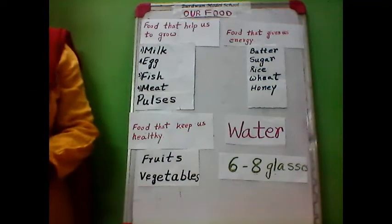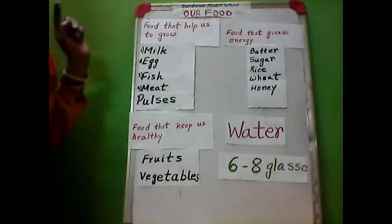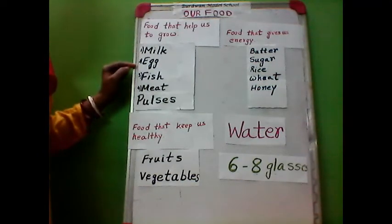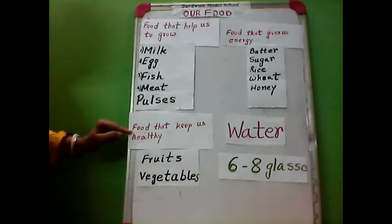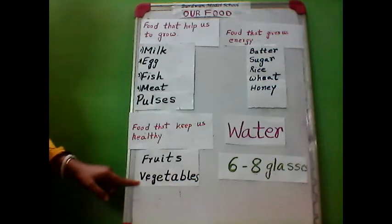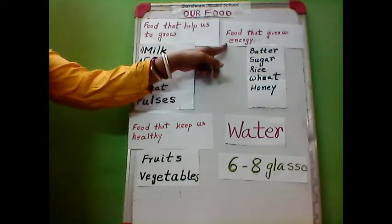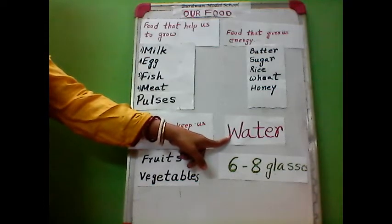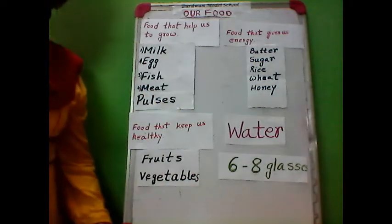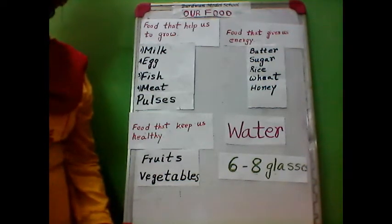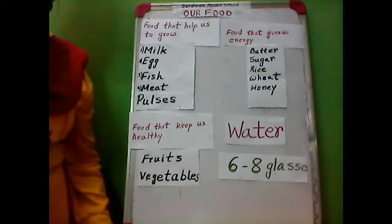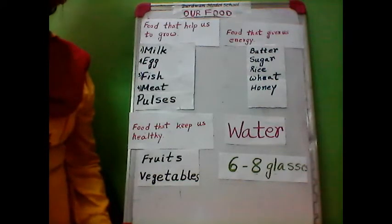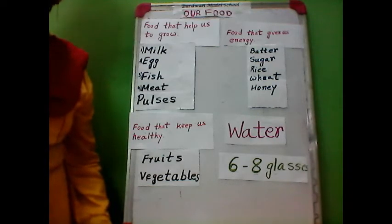This was today's classwork. We learned about food that helps us to grow: milk, egg, fish, meat, and pulses. Food that keeps us healthy: fruits and vegetables. Food that gives us energy: butter, sugar, rice, wheat, and honey. And the most important thing — we should drink lots of water, at least six to eight glasses regularly. Learn this along with your spellings and get ready for your worksheets, which I will be giving you very soon. Parents, please help the students to learn these things from each and every class.